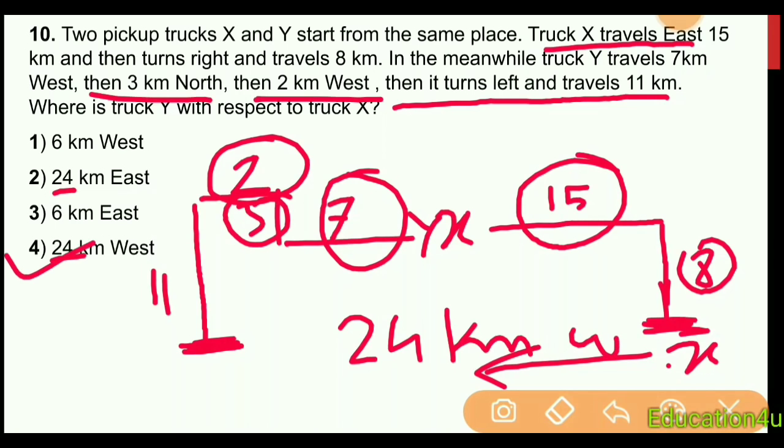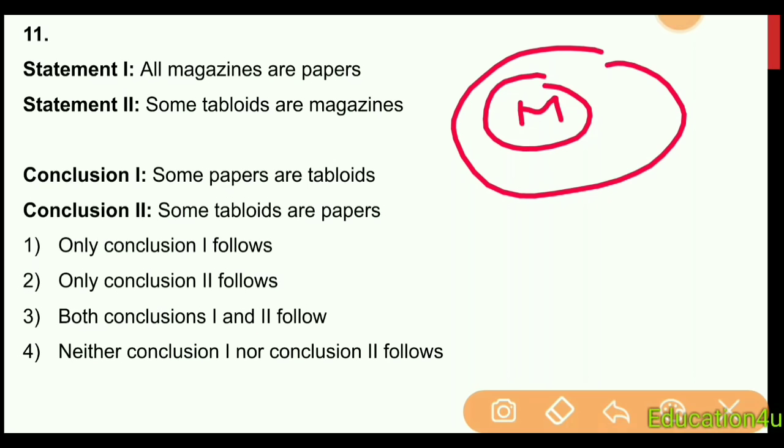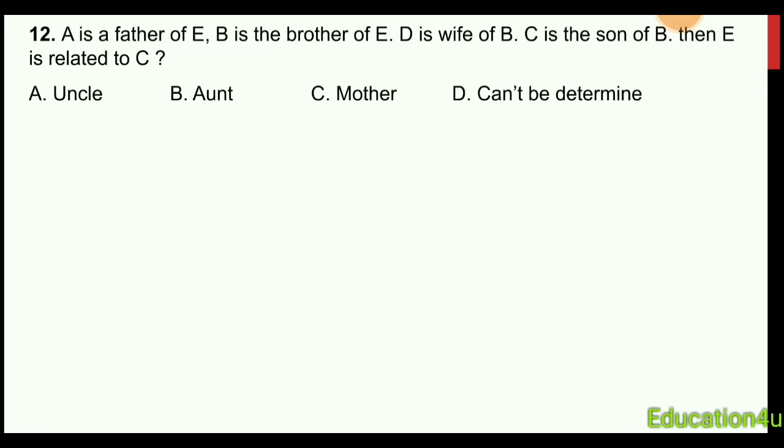Logic problem: All magazines are papers. Some tabloids are magazines. Conclusion one: Some papers are tabloids. Conclusion two: Some tabloids are papers. We need to determine which conclusions follow from the given statements.